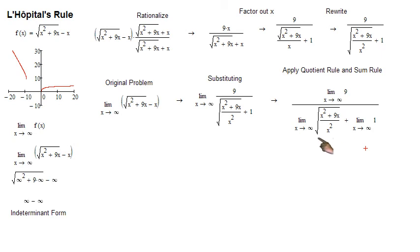So we have the limit of 9, the limit of this radical, and the limit of 1. When you simplify this limit and this limit, you get just the constant, because there's no variable in it. So we're left with this, the 9 and the 1 just kind of hanging out until we're done with this limit here.